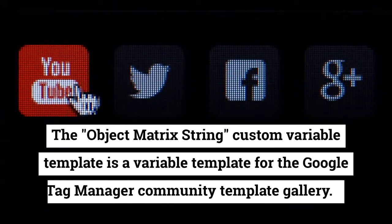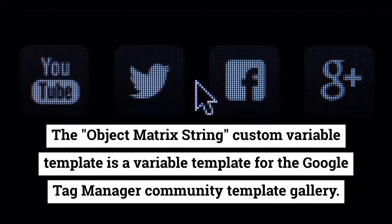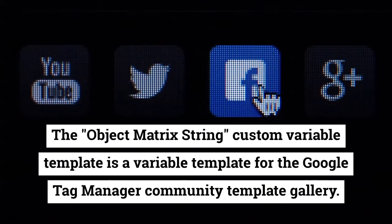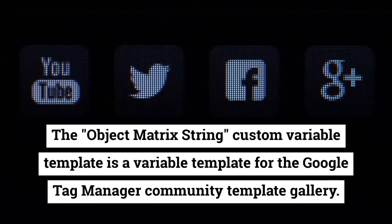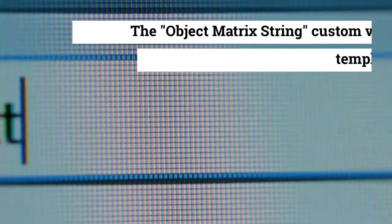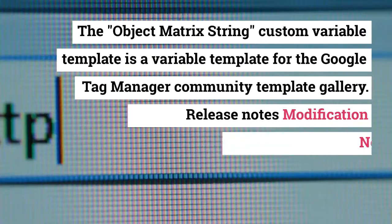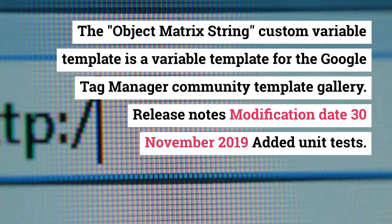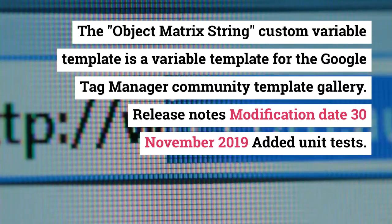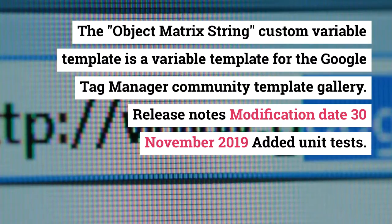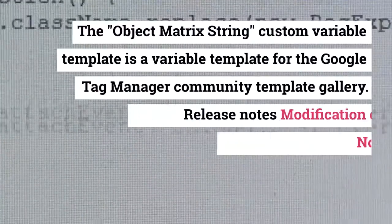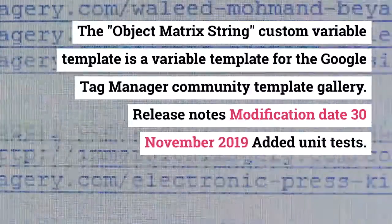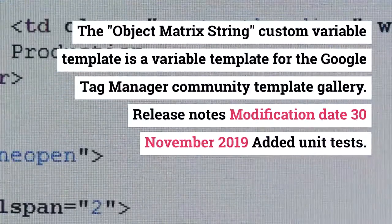The Object Matrix String Custom Variable Template is a variable template for the Google Tag Manager Community Template Gallery. If you have a set of objects, you can use this template to create a new string with the values of only one of the keys that are shared in all or some of these objects.